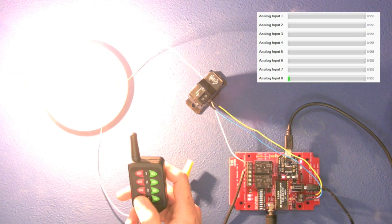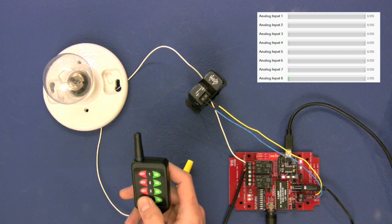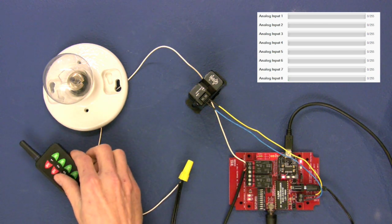This is because this light bulb doesn't pull very much current and the Varus sensor doesn't output very high voltage accordingly.